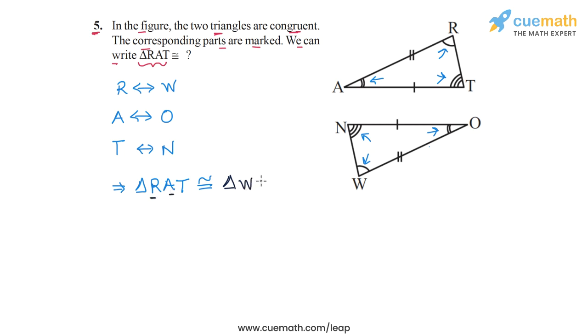Then A corresponds to O. So we write O next. And then T corresponds to N. So we write N. So triangle RAT is congruent to triangle WON. And this is how you can complete the congruence relation in the question.